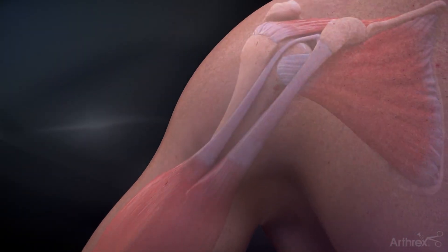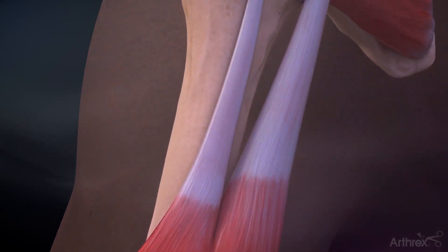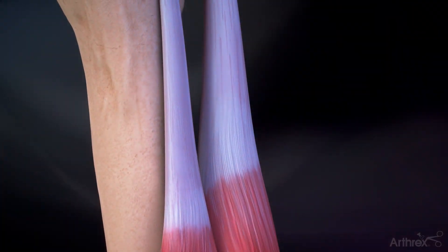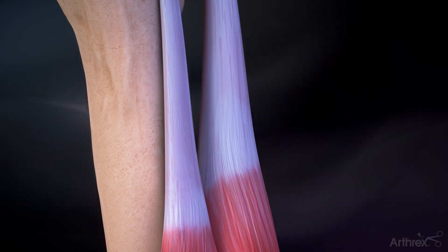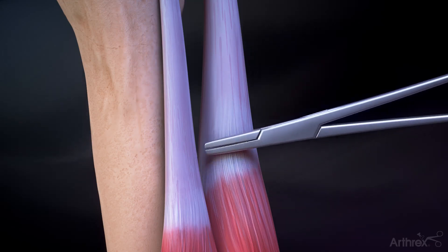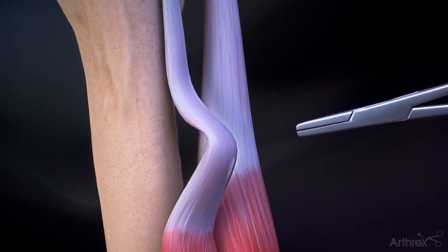Make a 2 to 3 centimeter incision in the axilla at the inferior border of the pectoralis major. Bluntly dissect to identify the pectoralis major and the long head of the biceps tendon. Retrieve the previously tenotomized biceps tendon through the incision.